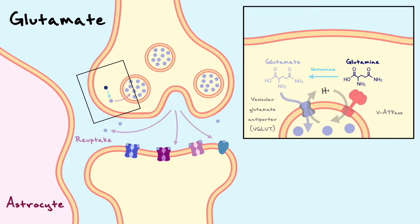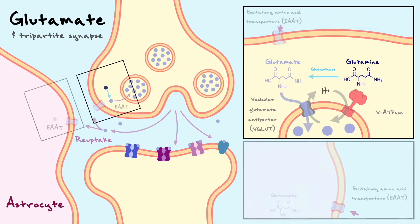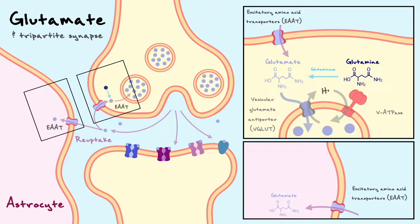Astrocytes participate with both the presynaptic and postsynaptic cell, and for that reason it is often said that the three structures form a tripartite synapse. When glutamate is in the synaptic cleft, it can enter the astrocyte and the presynaptic cell through a class of transporters called the excitatory amino acid transporters, or simply EAAT.